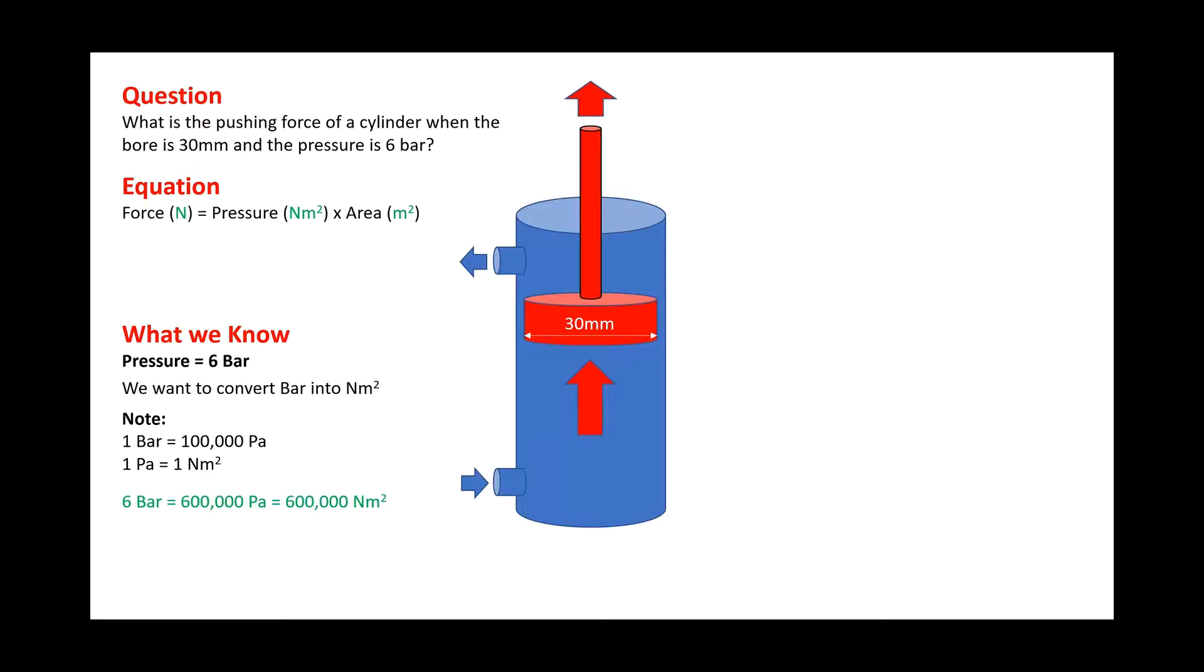So we now have our pressure in the correct format for our equation. What we also know is the diameter of the bore of the piston is 30 millimeters, so we're now going to calculate the area of the piston.